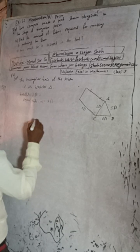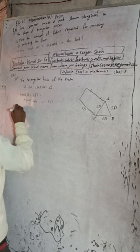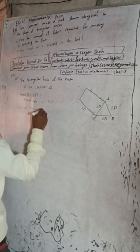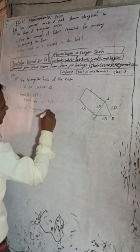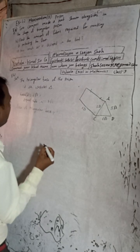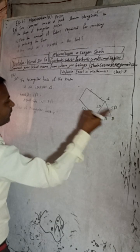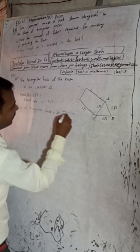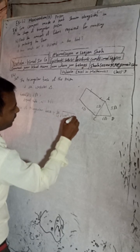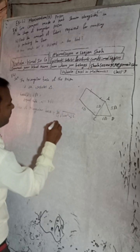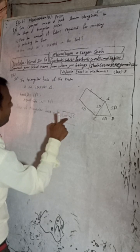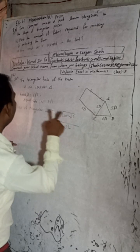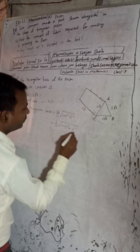Now, the area of the triangular base — also known as the area of the cross-section — is given by the formula: b divided by 4, times the square root of (4a² − b²). Substituting: b = 6 feet, so 6 divided by 4, times the square root of 4 times 5 squared minus 6 squared, which gives us 4 times 25 minus 36, under the root.